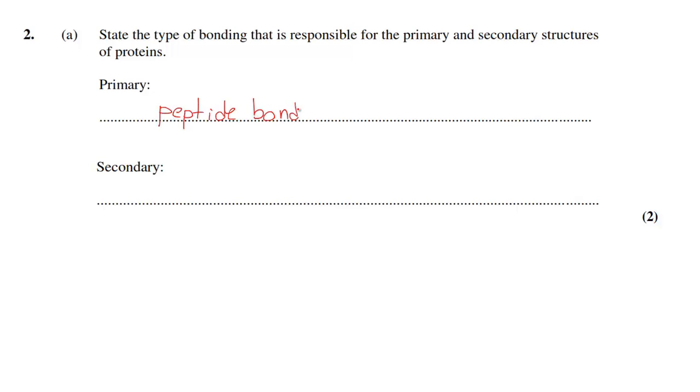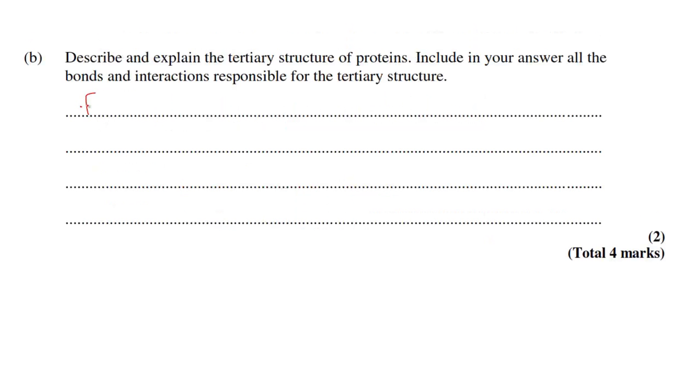Again the same question: primary structures have peptide bonds or covalent bonds, secondary is hydrogen bonding. The next question is describing the tertiary structure of proteins, so it's the folding of the secondary structure to form a 3D structure of the protein.